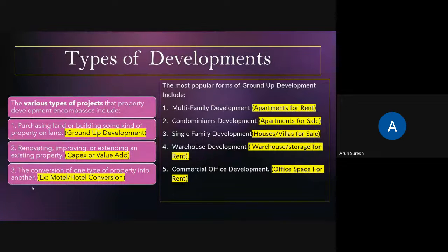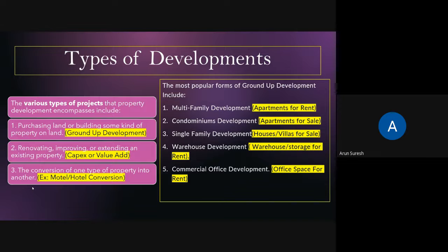There are various types of projects that property development can be done for. When you purchase land and build on it, it is called ground up development — that's what we focus on mainly. Next is renovating, improving, or extending an existing property. For example, if you think adding a gym to an apartment will make it sell better, those are called capex or value-add developments. Third is conversion of one building purpose to another — for example, hotels can be converted into apartments just by adding kitchens to rooms. These are called conversion developments.